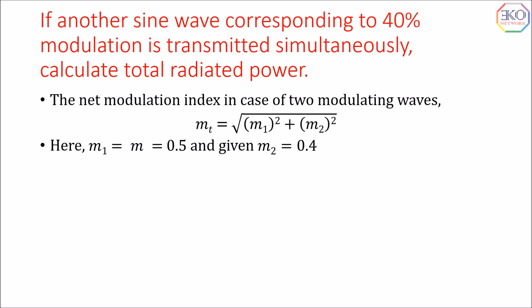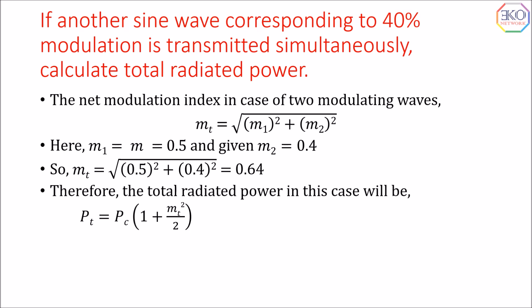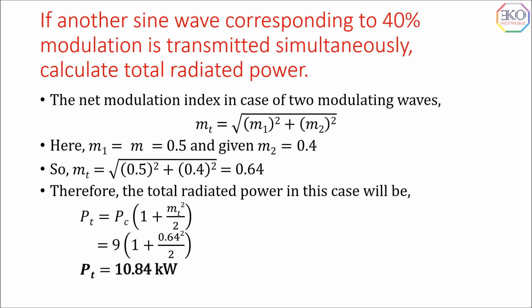A second sinusoidal wave of 40% modulation is transmitted, meaning m2 = 0.4. Using the formula, mt = √(0.5² + 0.4²) = 0.64. To calculate total radiated power: Pt = Pc × (1 + mt²/2), with mt = 0.64 and Pc = 9 kilowatt. Substituting those values gives Pt = 10.84 kilowatt.